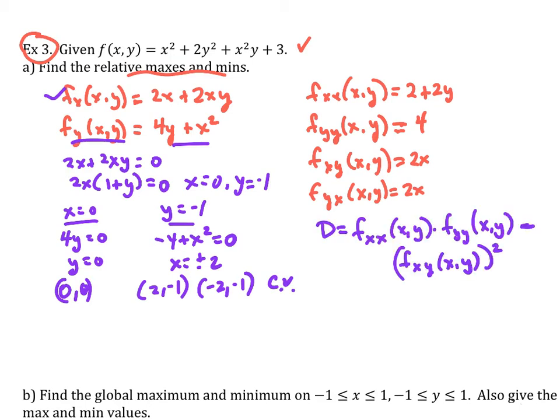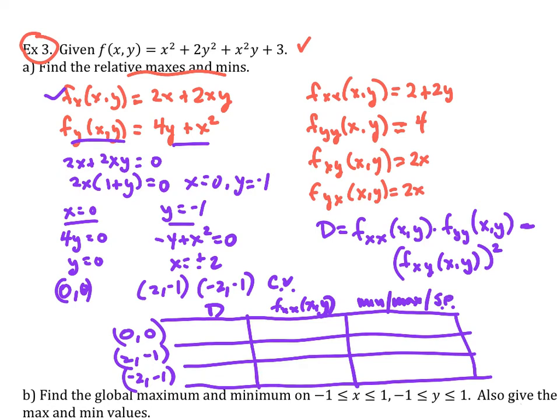And if I want to go ahead and use my second derivative test on this, I can set up a little table with these values in them. I got 0 and 0 and then 2, negative 1. And then I got negative 2, negative 1. And then I'm going to find my d value for those. And then I'm going to compare this value in case if I have a relative max or relative min. So if I plug in 0, 0. If I start with this one, I'm going to plug in 0, 0 up here and I'm going to get 2 times 4, which would give me 8. And then I'm going to subtract out what happens when I plug in 0 here. Quantity squared, I'm going to just get my 8.